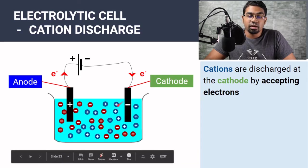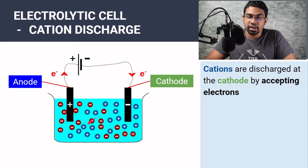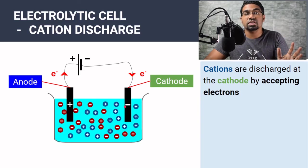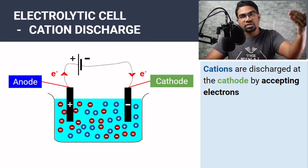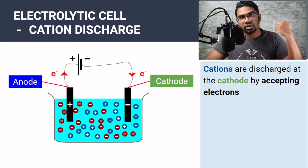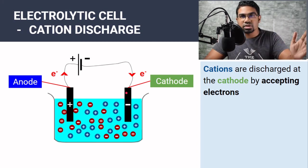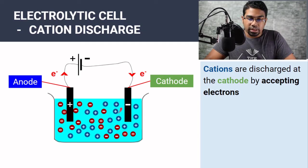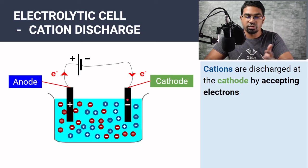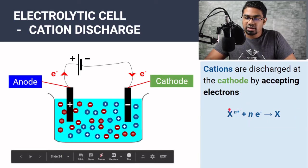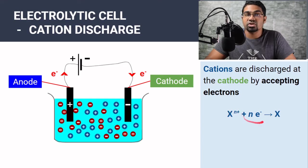Then at the cathode, since it's the negative electrode, it will attract positive ions — the cations. So cations will come to the negative electrode. Since they are positively charged, the only way they became positively charged is if they lost electrons before, meaning they are lacking electrons. The positive charge is more than the negative charge because electrons were previously lost, so in order to become neutral they have to gain electrons. The cations will accept electrons from the external circuit to be discharged — to lose their charge and become neutral. The general equation: if we have X with a charge of N plus, it needs N electrons to become neutral.